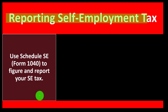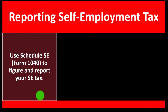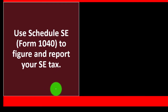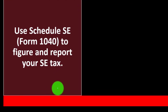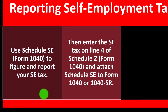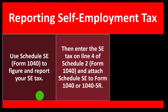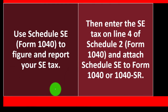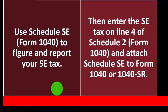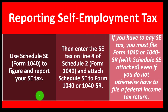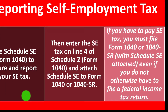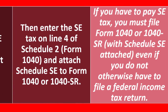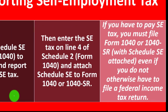So how do we report it? You use Schedule SE, Form 1040, to figure and report your self-employment tax. Then enter the SE tax on line 4 of Schedule 2, Form 1040, and attach Schedule SE to Form 1040 or Form 1040-SR.